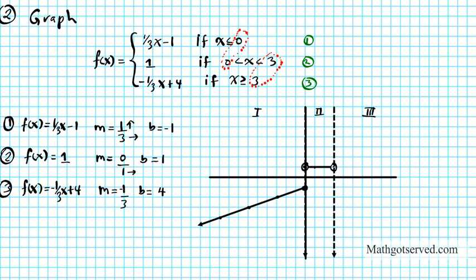To graph that, you're going to start from four on your y-axis, then rise negative one — which means you go down one — and run three. Do that again: go down one, run three. The more points you have, the more accurate your graph will be. So let's draw the line, starting from here. Now I'm going to ask myself: does this line include the partition at x equals three? Looking at the inequality, x is greater than or equal to three, so this line includes the partition — I'll draw a filled circle here.